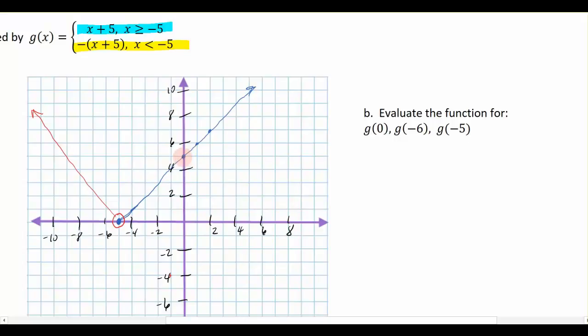But algebraically, what would we do? Well, we would essentially plug in 0 to one of these two equations here. But which one would I choose? 0 is greater than negative 5, so we would choose the blue one. So g of 0 equals 0 plus 5, or in other words, 5. And that does line up with what I thought it would be on my graph. But that's how we do it. We choose. We have to make a choice. Which one of these two do I want to plug in my 0 at?